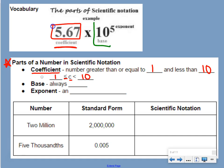Our base is always 10. And then our exponent is an integer, which means it can be a positive or negative whole number.